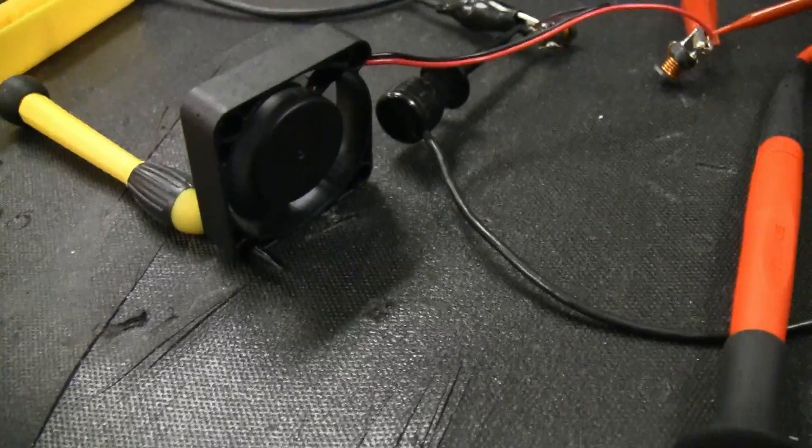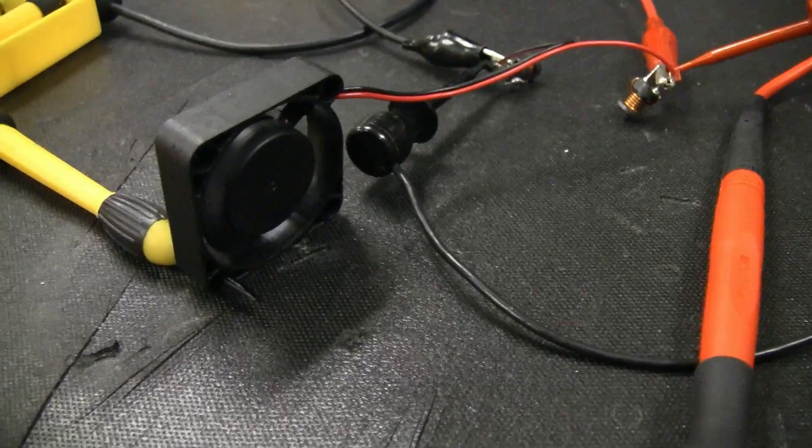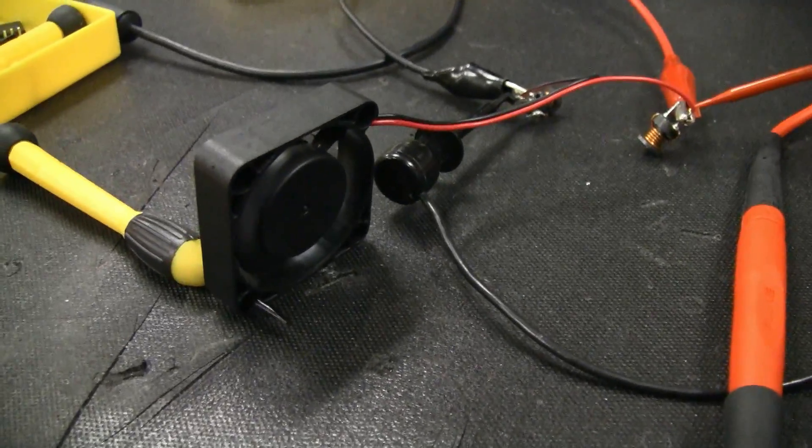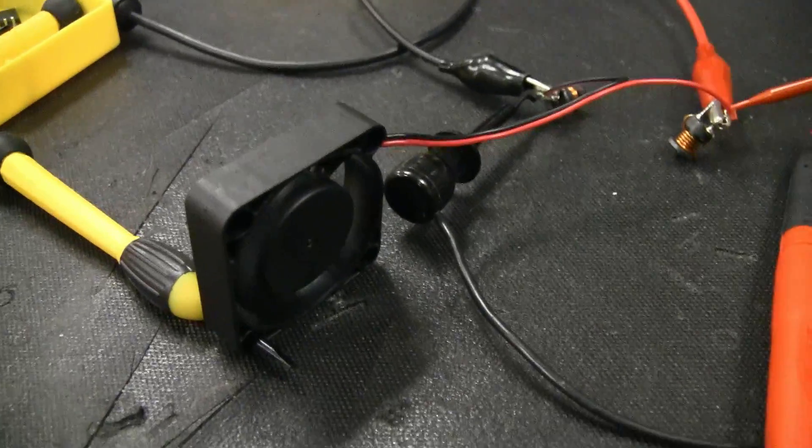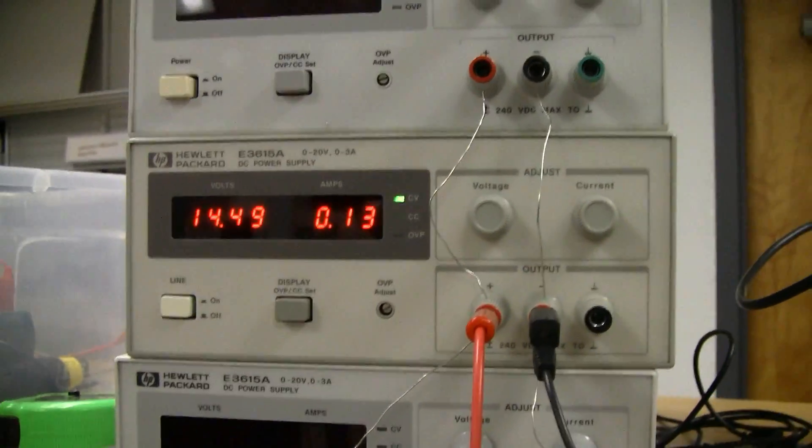So here's the fan. It's running. It's about a 40 millimeter PC fan, brushless DC fan, nothing crazy. I picked up a bunch of them a few years ago for about 99 cents each, and they've just been laying around. And right now I've got this connected to 14 and a half volts, which is about where my car idles when it's on, the voltage anyway. And we're pulling about 130 milliamps, no big deal.